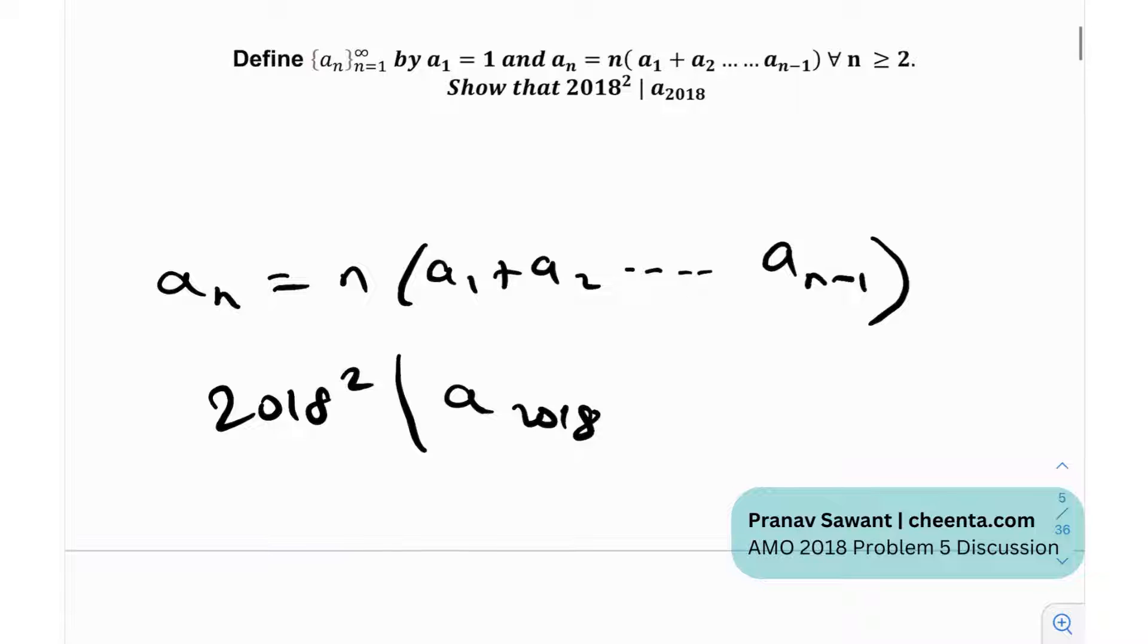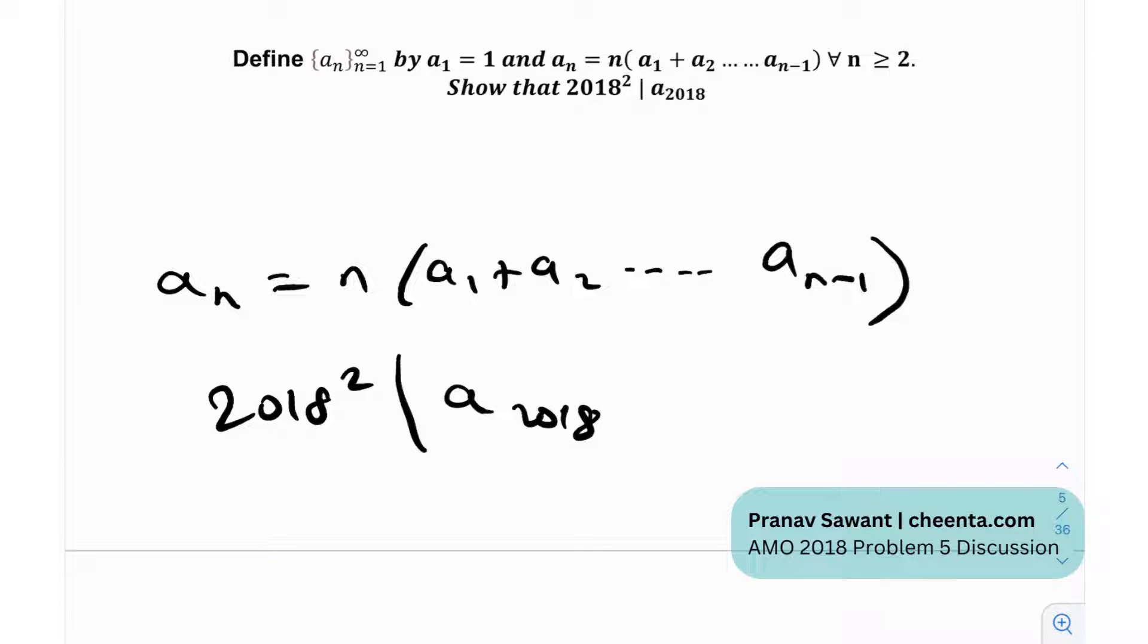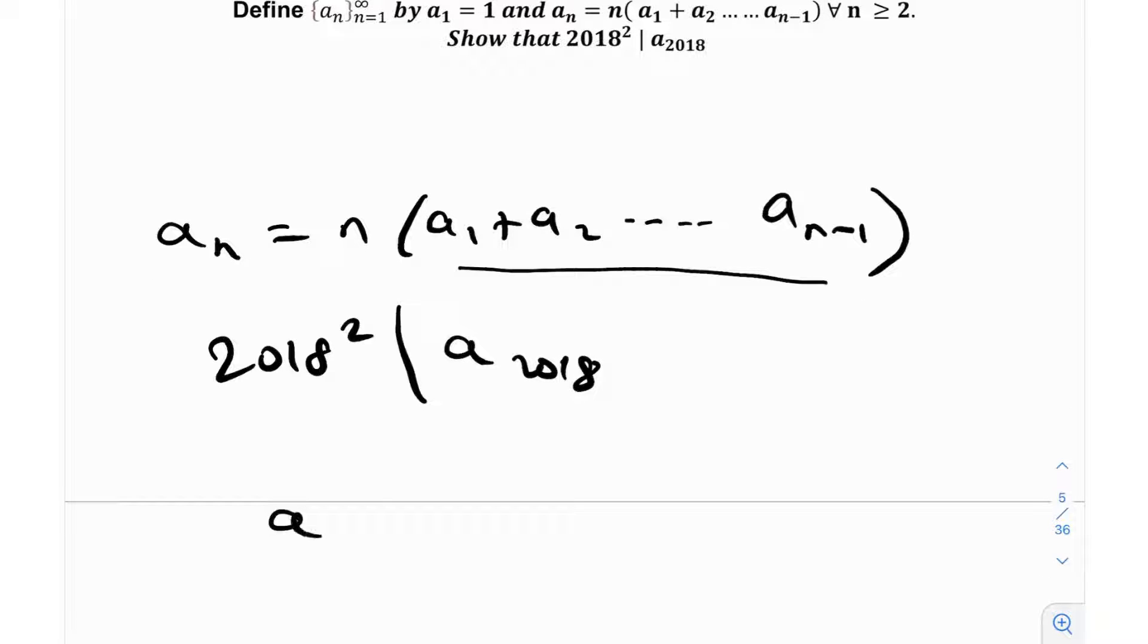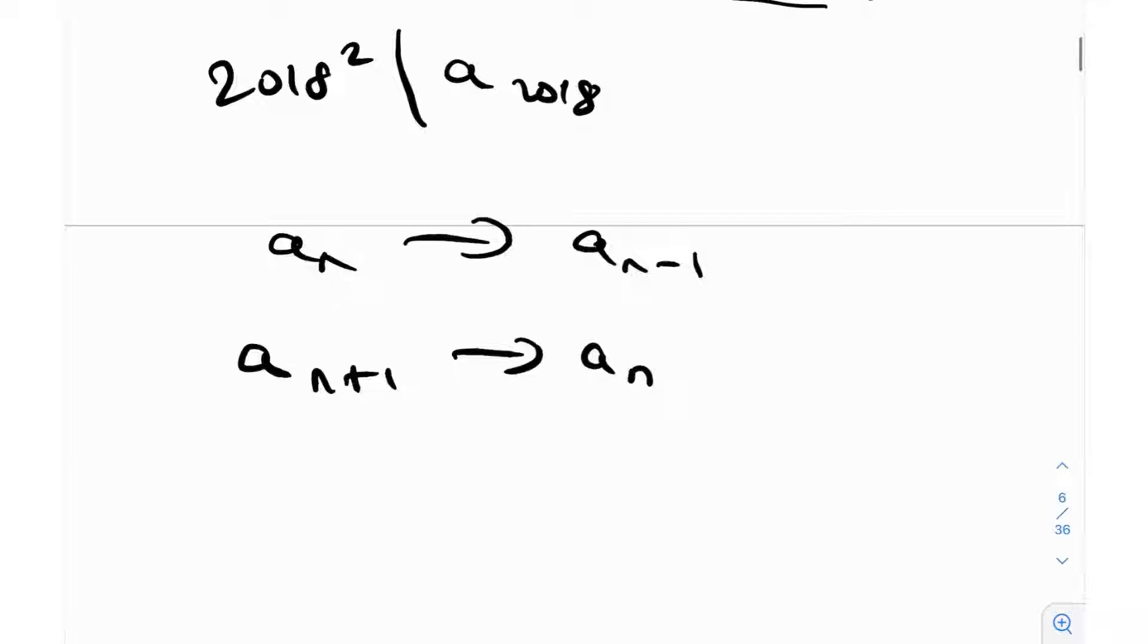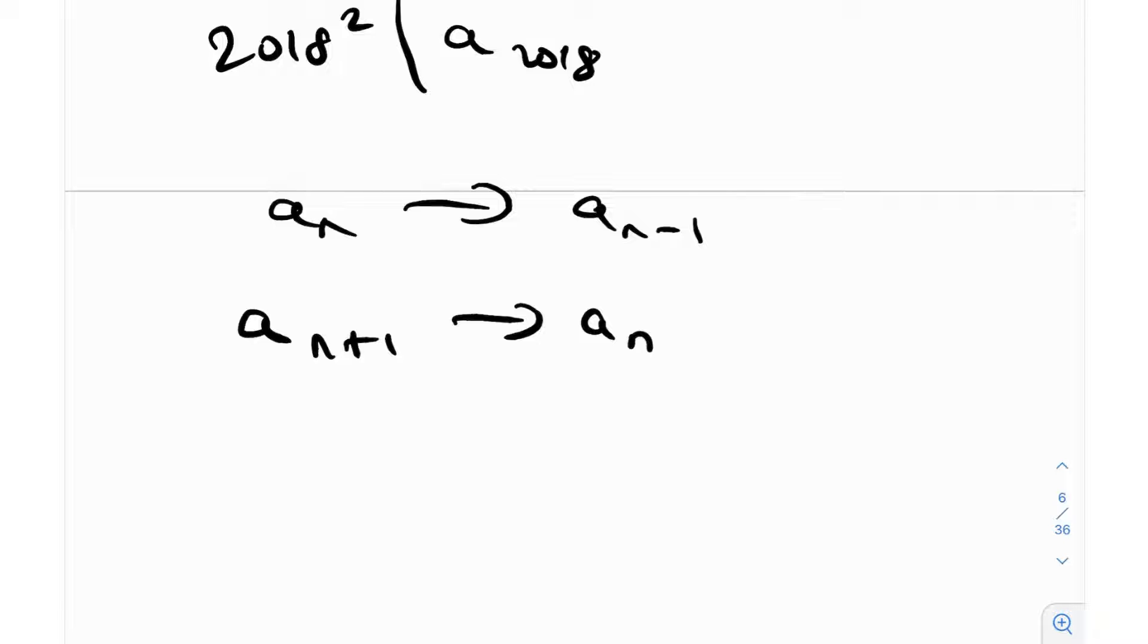When we see something like this, we need to write aₙ as a one-step recursion. What that means is writing aₙ in the form of aₙ₋₁, or you can also write aₙ₊₁ in the form of aₙ. Once you get into that form, things become a lot easier. Let's see how we can reduce this recursion.